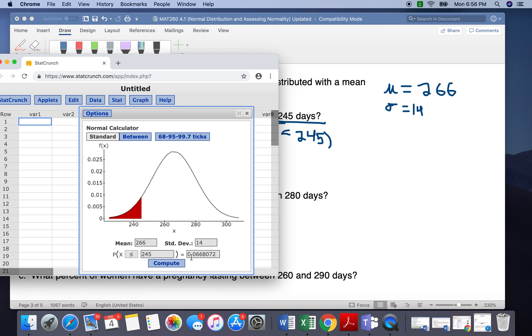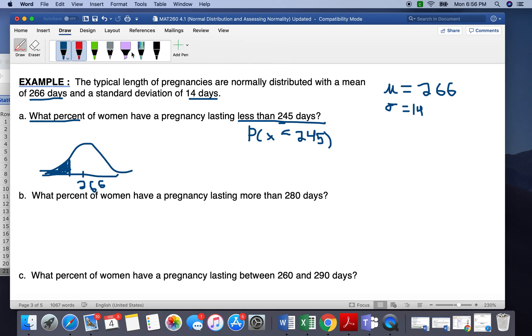And we're going to get 0.0668. So we get 0.0668. Now we can see only a small portion is filled in over here. So that makes sense that that's an area of about 7%.